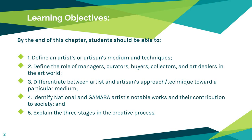So our learning objectives for today. By the end of this module or chapter, you should be able to define an artist's or artisan's medium and techniques; to define the role of managers, curators, buyers, collectors, and art dealers in the art world; to differentiate between artist and artisan's approach or technique toward a particular medium; and to identify national artists and GAMABA artists and their notable works and their contribution to the society. And then explain the three stages in the creative process.